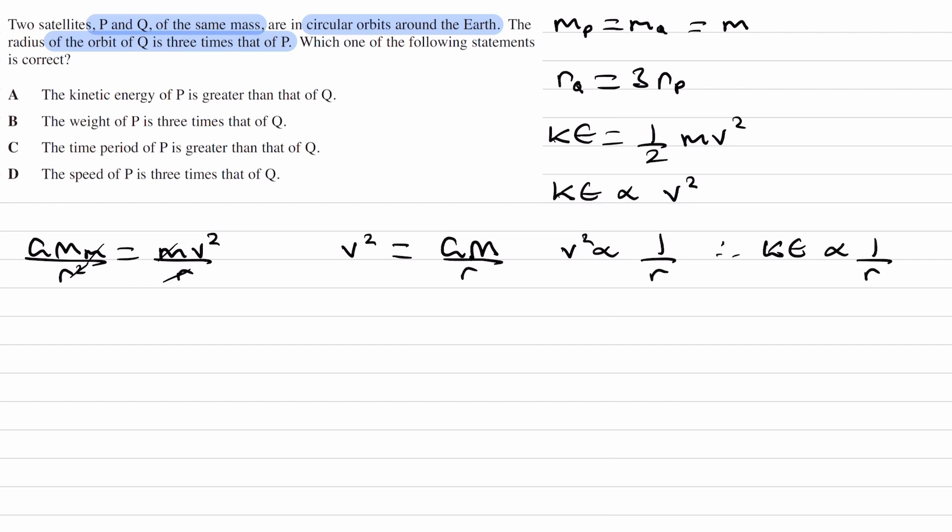Okay, so the option says, kinetic energy of P is bigger than that of Q. So Q has a larger distance, Q is further away. Maybe I'll actually rearrange that for RP. RP is equal to a third of RQ. So P has a smaller distance away than Q does, so if P's distance is smaller, we're doing 1 over that. But if P's distance is smaller than Q's, that means P's kinetic energy will be bigger.